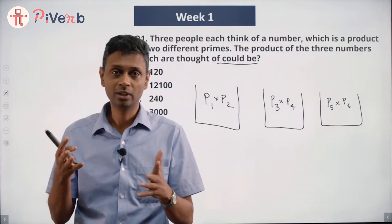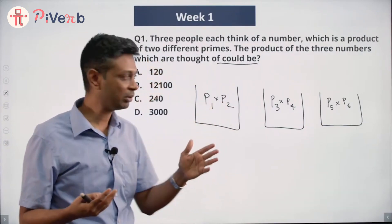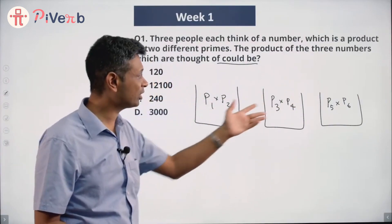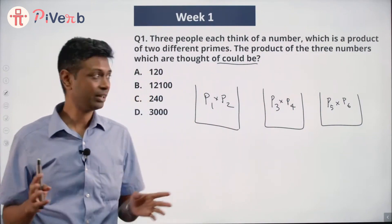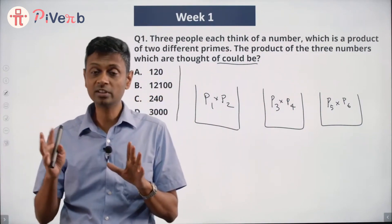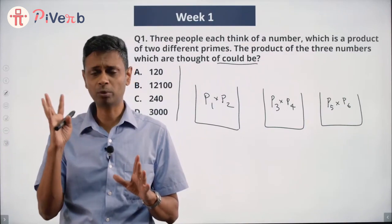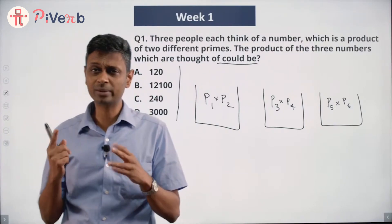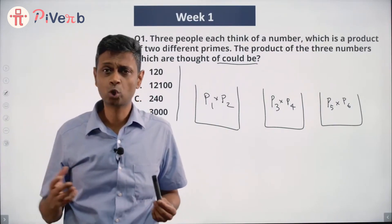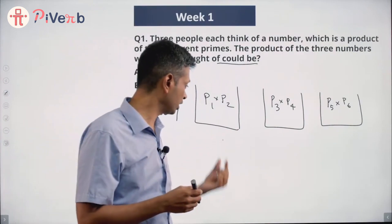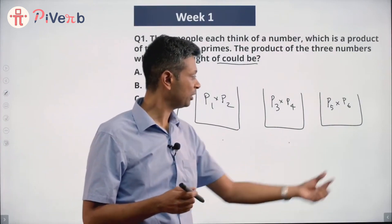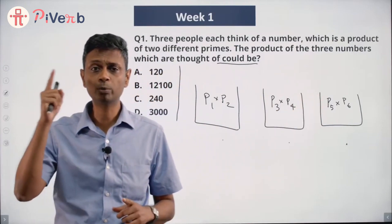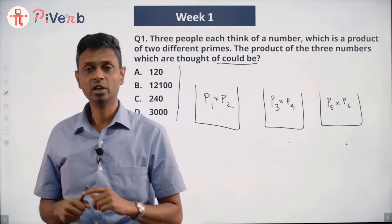He's not saying there's only one possible value — there are many. For example, p1=2, p2=3, p3=11, p4=13, p5=17, p6=19 would work. But among the four given choices, only one is a possible answer; the other three are not. You'll need to go step by step and check each number.